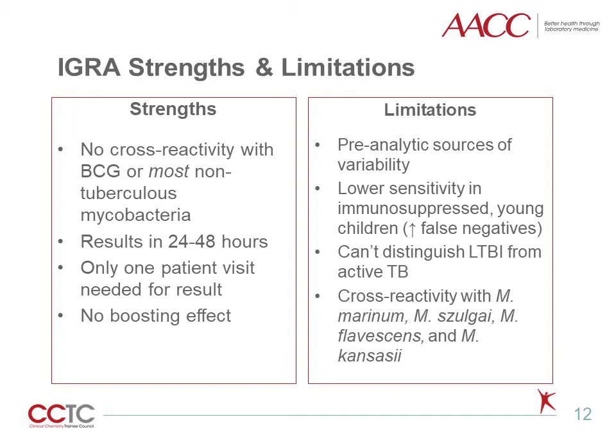IGRAs also have limitations to consider. Key limitations include pre-analytic sources of variability, including under- or over-filling of blood tubes, too-vigorously shaking the collection tubes after blood draw, and delays in incubation time, all of which can affect the accuracy of the result. Additional limitations include lowered sensitivity in certain patient groups, IGRA's inability to distinguish between latent TB infection and active TB, and IGRA's cross-reactivity with certain non-tuberculous mycobacteria, including M. marinum, M. shulgai, M. flavicins, and M. kansasii.